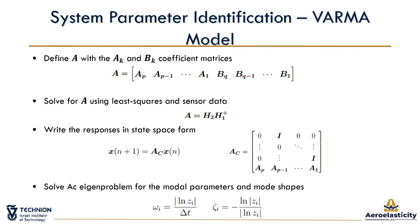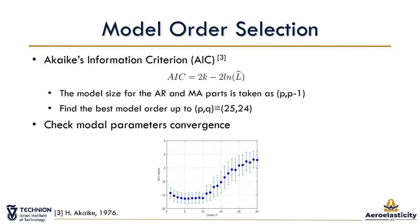From all modes, we need only the two modes that participate in flutter to evaluate the stability parameter. The method we use to define the model order is the Akaike information criterion, AIC. The AIC determines the best model order using a maximum likelihood estimator for the AR order P and MA order Q. Note that for the VAR model, Q is set to zero. For each combination of AR and MA orders, the AIC is computed and the best model order is the one with the smallest value. The AIC was calculated for each response separately and averaged over all tested airspeeds. In cases where the AIC converged at higher orders, which could pose an overfitting problem, we proposed an additional criterion based on model parameter convergence.